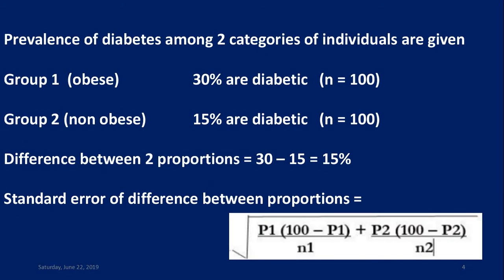Now we can go through an example. Prevalence of diabetes among two categories of individuals is given. Group 1 is obese individuals; Group 2 is non-obese individuals. Among Group 1, 30% are diabetic with a sample size of 100. Among Group 2, 15% are diabetic with a sample size of 100.